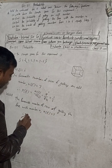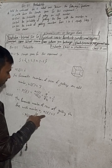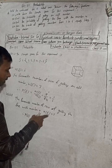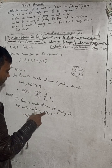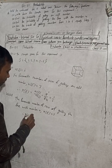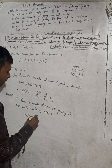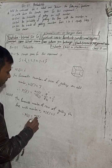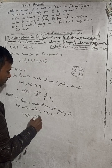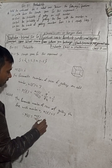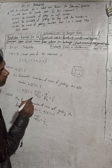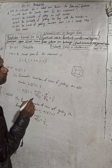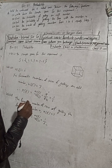Therefore, the probability of getting the face with the number 4 is P(E) = n(E) / n(S) = 1/6. So the answer is 1/6.